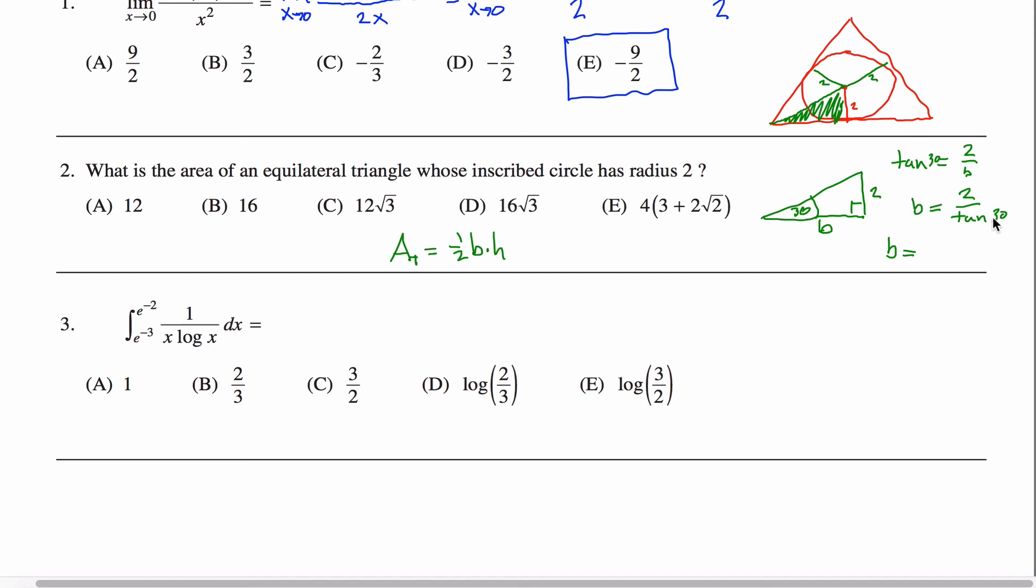I do have cosine and sine memorized off my unit circle. The cosine of a 30-degree angle is root three over two. And the sine of 30-degree angle is one half.